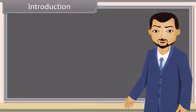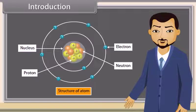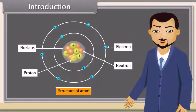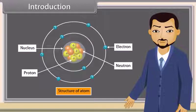Today I'll teach you the topic: structure of atom. Atoms are the fundamental units of matter. Everything around us is made up of atoms. A typical atom consists of a nucleus of protons and neutrons, with electrons orbiting this nucleus.